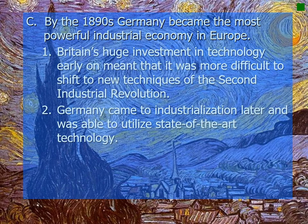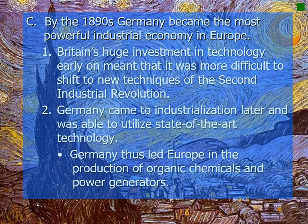Germany came to industrialization later and was able to utilize state-of-the-art technology as a result. The unification of Germany — to be covered in Unit 8 — is important context here. When referencing Germany at this point, in some cases we refer to the unified German Empire created after 1871, and in other cases still to the Germanic principalities of the German Confederation. Germany thus led Europe in the production of organic chemicals and power generators.